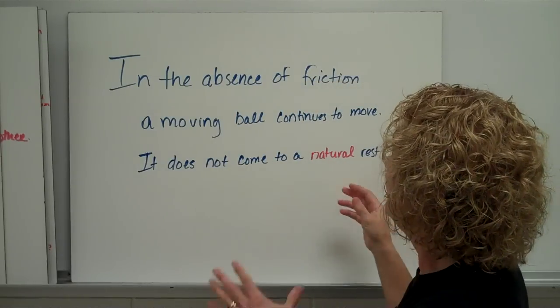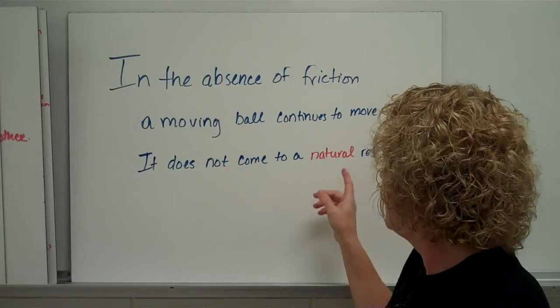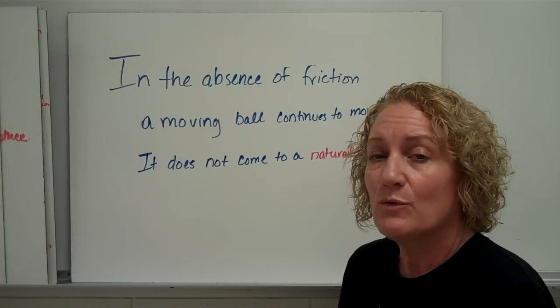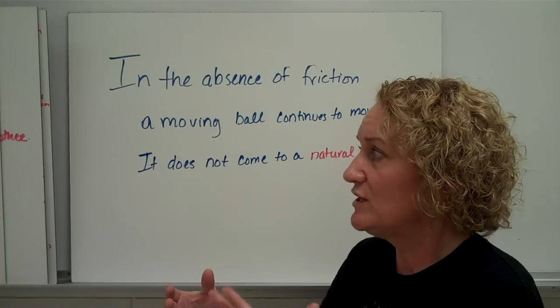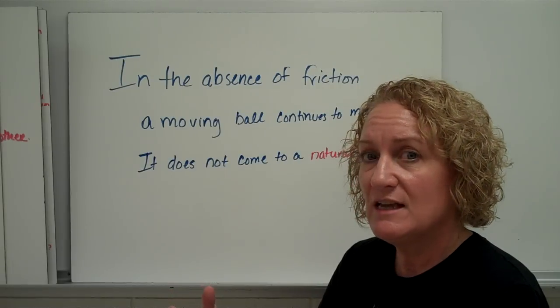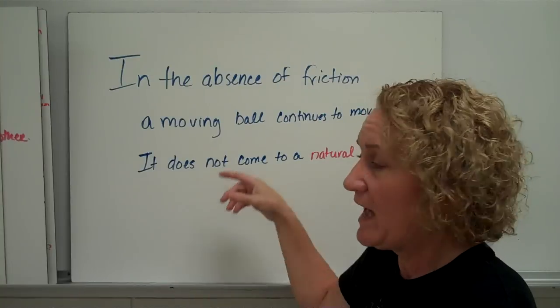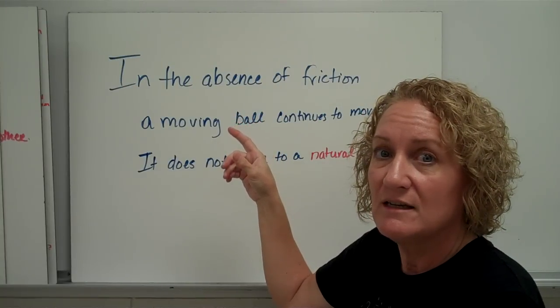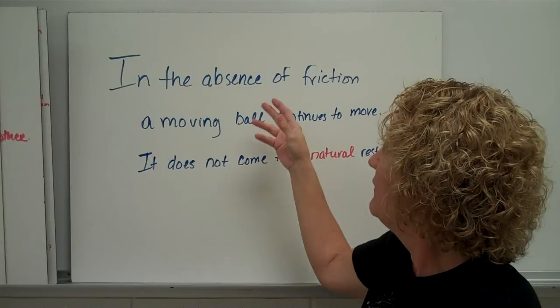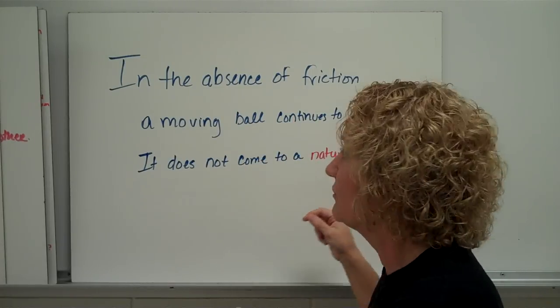So he said, in the absence of friction, a moving ball continues to move. It doesn't come to a natural rest. Was he talking about what Aristotle said with natural motion and violent motion? Maybe. Because he showed that even heavy objects would go back up and Aristotle said they wouldn't. In the absence of friction, a moving ball continues to move. It does not come to a natural stop.